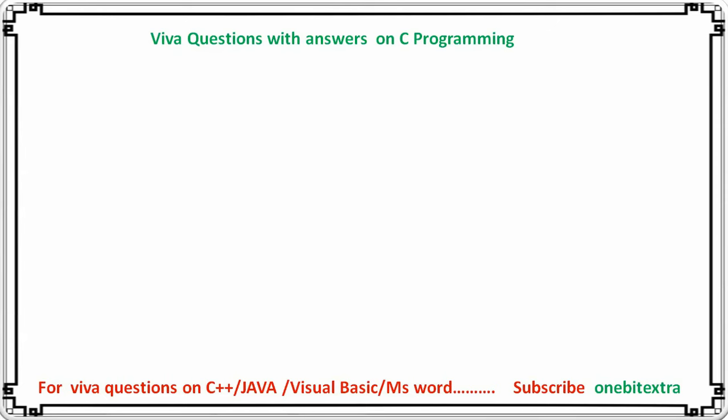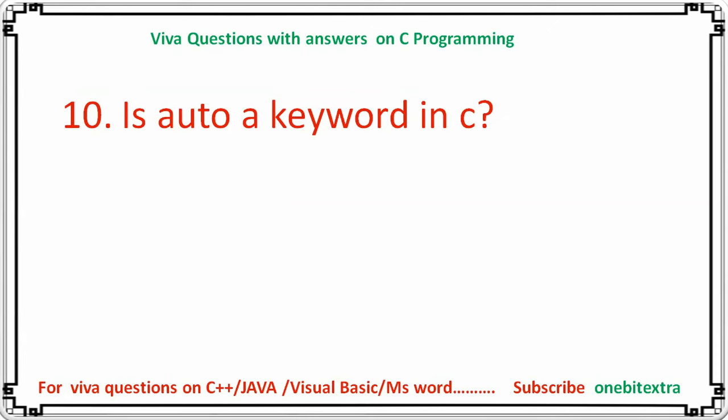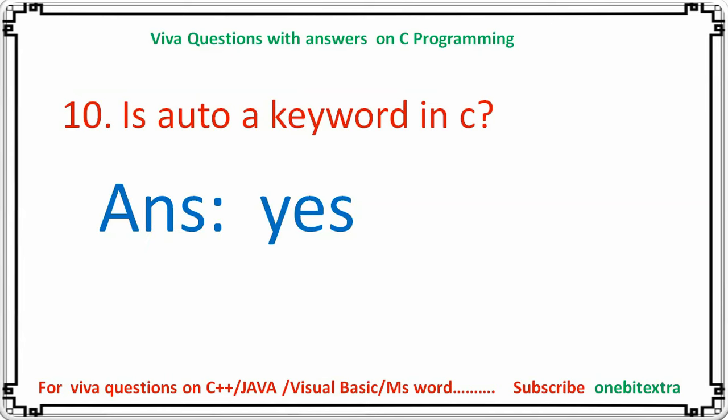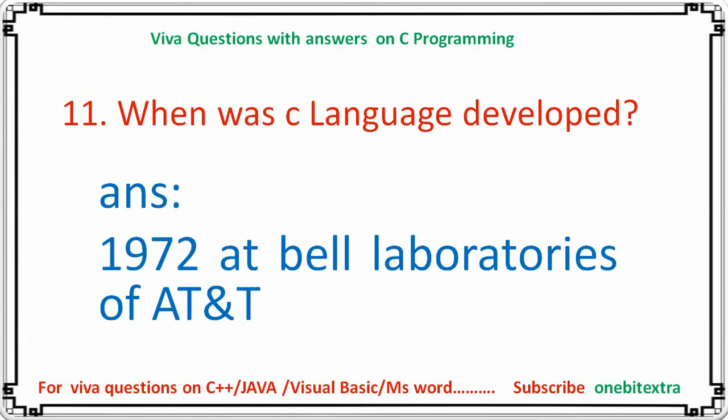Next question: how many keywords are there in C language? The answer is 32 — C language has 32 keywords.